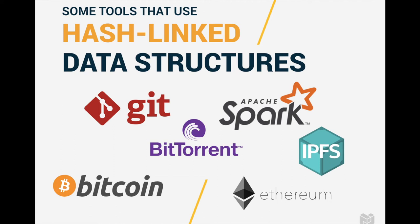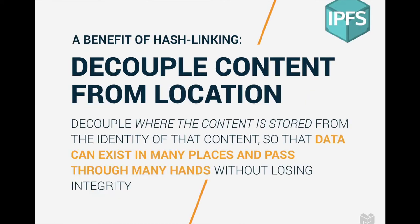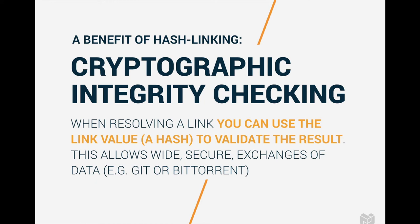Underlying this pattern, the thing that makes it powerful is that you're using hash-linked data structures. This is a pattern we've already seen impact a number of areas of the technology industry through technologies like Git, Apache Spark, Bitcoin, and BitTorrent — all of these technologies are using the pattern of hash-linked data structures. The benefits are: first, we can decouple content from its location, allowing any content to exist in many places and pass through many hands without losing integrity. Underlying that is cryptographic integrity checking — you can use the hash itself to validate the content you got, which is a powerful tool for ensuring the integrity of entire systems of data over time and as they're transmitted over the web.